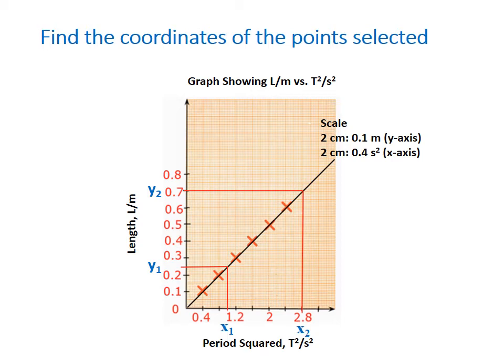So x2, we can clearly see that it's 2.8. x1, however, some persons will probably have to count. So this is 0.4. Halfway between here would be 0.2. So it's 0.2, 0.4, 0.6, 0.8, 1, 1.2. So that means x1 is 1, or 1.0.